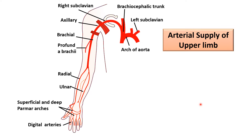Before starting with the axillary artery, let us have a brief overview of the arterial supply of the upper limb. The arch of aorta gives three branches: on the right side the brachiocephalic trunk, then the left common carotid artery and left subclavian artery. The brachiocephalic trunk divides into the right subclavian artery and right common carotid artery. The subclavian artery, once it reaches the axilla, is called the axillary artery.